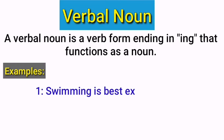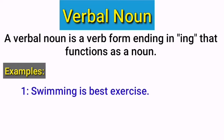Swimming is the best exercise. The word 'swimming' is a verbal noun because this word ends with -ing and functions as a noun. It functions here as the subject of the sentence. If someone asks you what the difference between a verbal noun and a gerund is, you should answer that there is no difference between a verbal noun and a gerund.